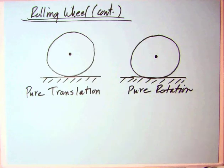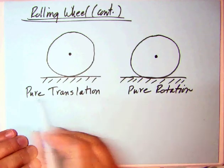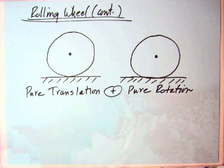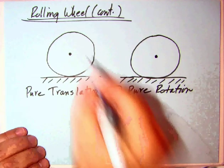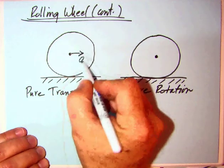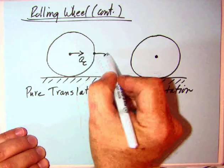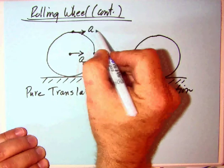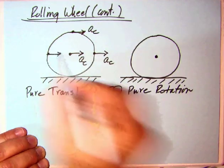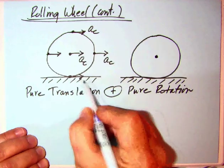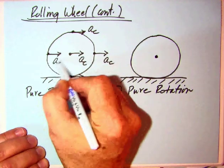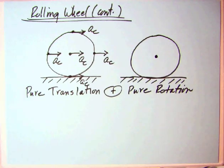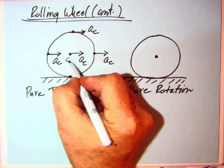What we will find is that the acceleration of Q does not equal zero. One component does, but not the other. Let's separate this into both rotation and translation on the next page. As we normally have done before, we look at 2D plane motion as a sum of a pure translation plus a pure rotation.